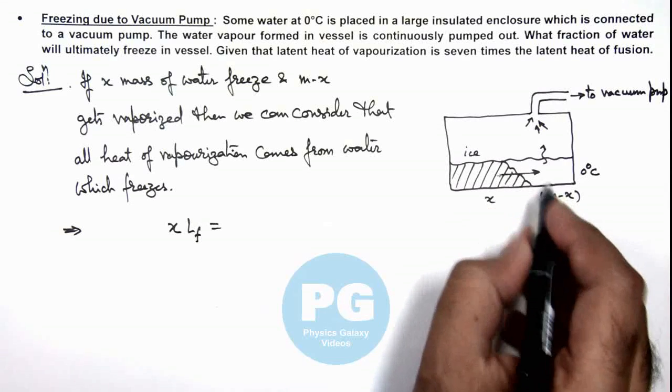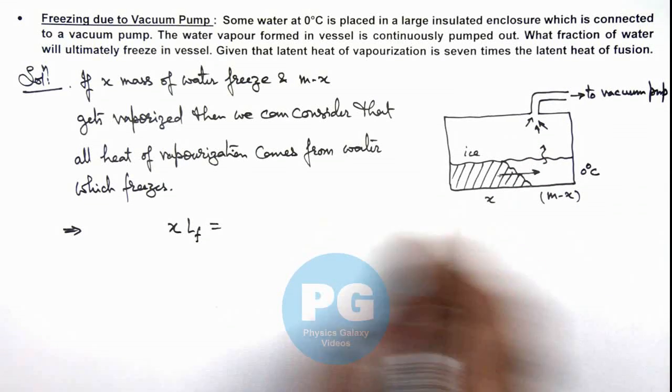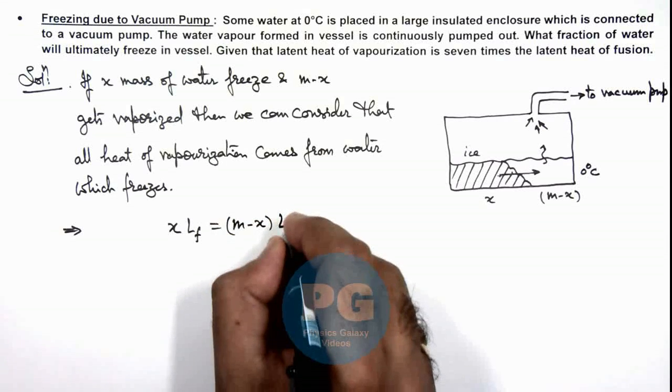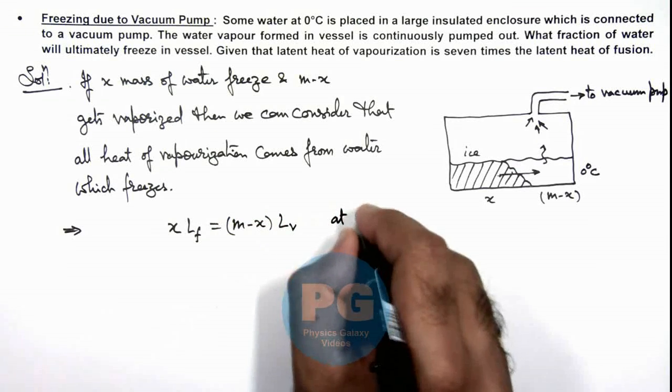and the same amount of heat vaporizes m minus x amount of water, so we can write it m minus x multiplied by latent heat of vaporization, and it's happening at zero degree centigrade.